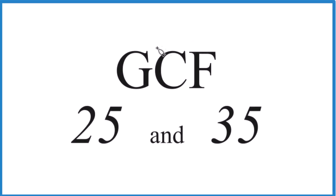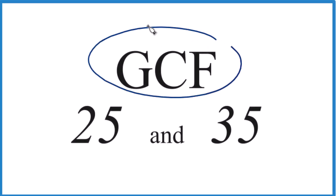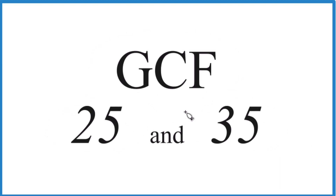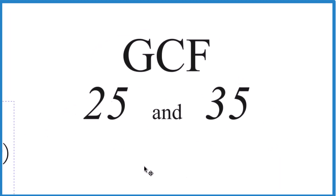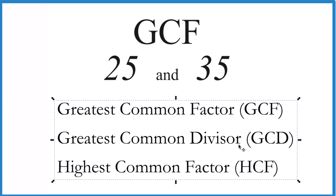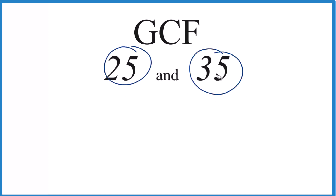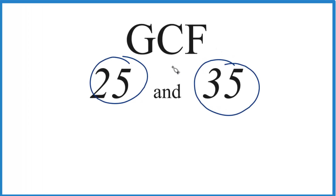If you're asked to find the greatest common factor for 25 and 35, here's how you do it. The GCF is also called the greatest common divisor or the highest common factor. We're going to use greatest common factor, GCF. So we need to find the factors for 25 and for 35, then compare them, look at the common factors, and choose the greatest one. That's the GCF.